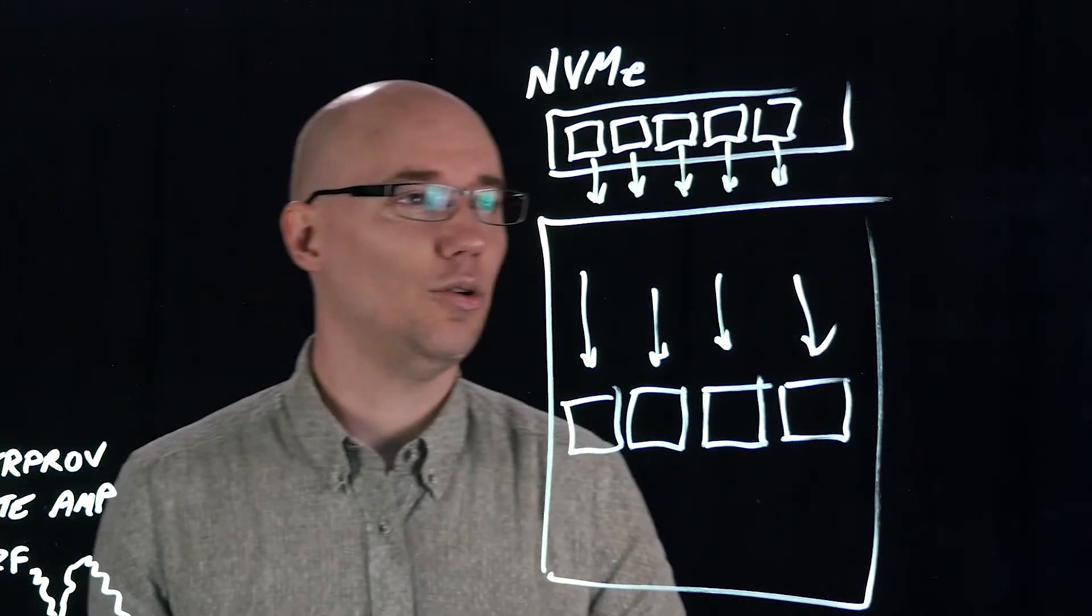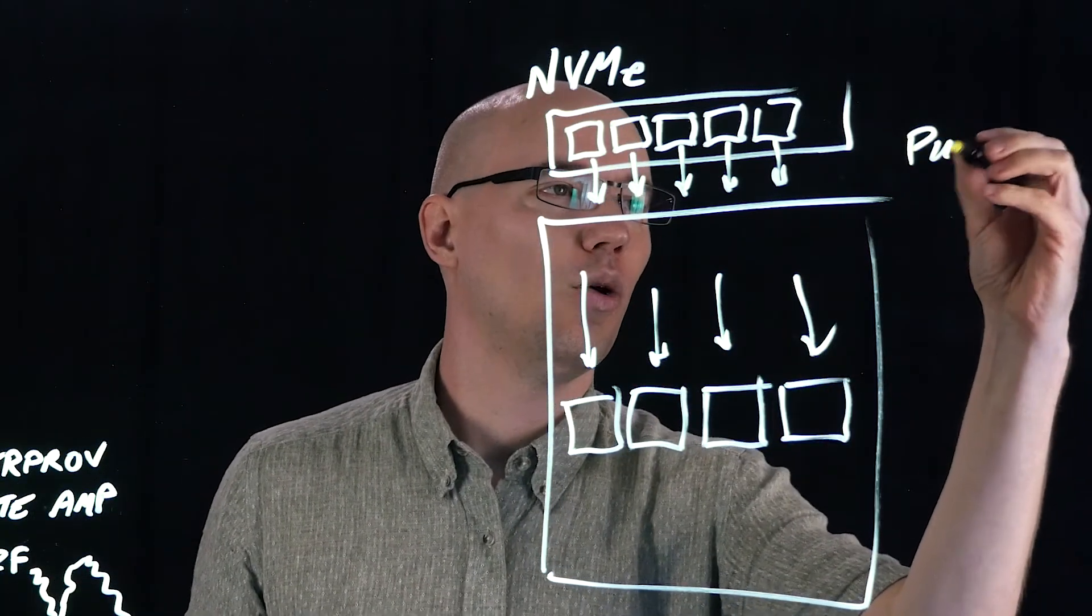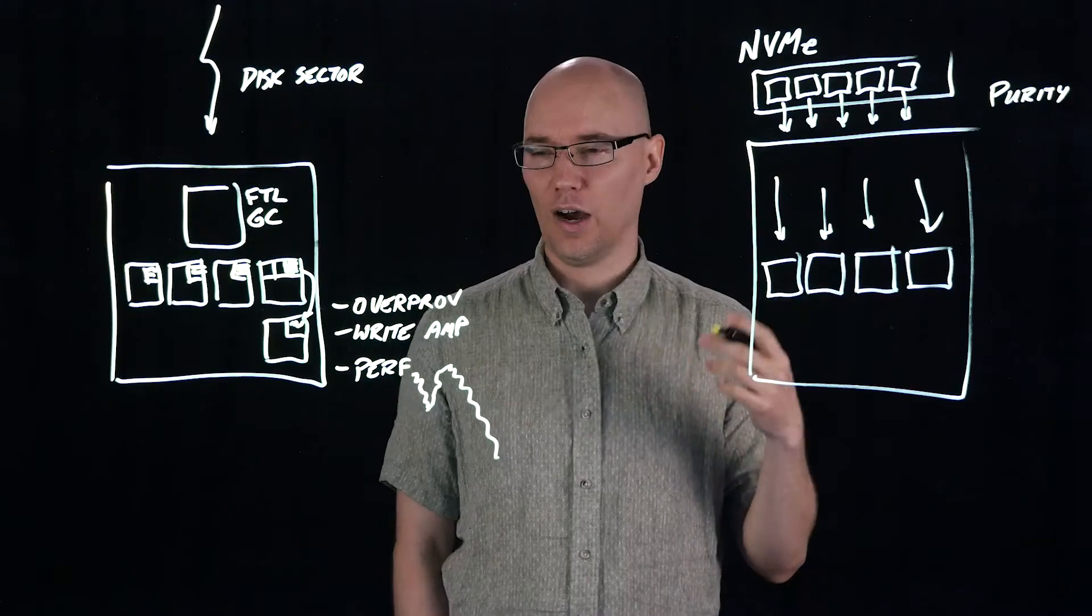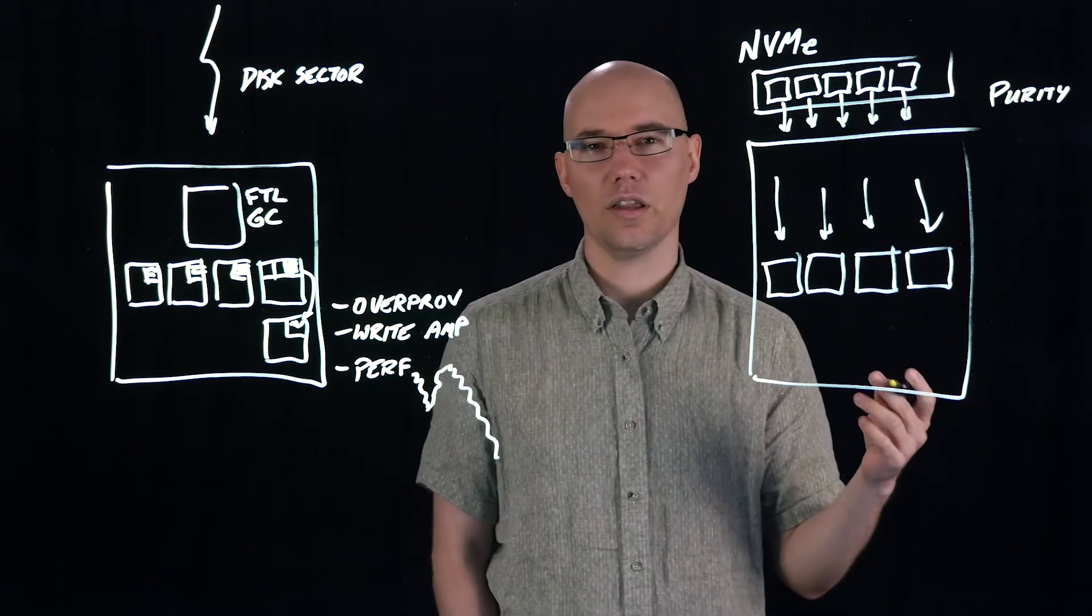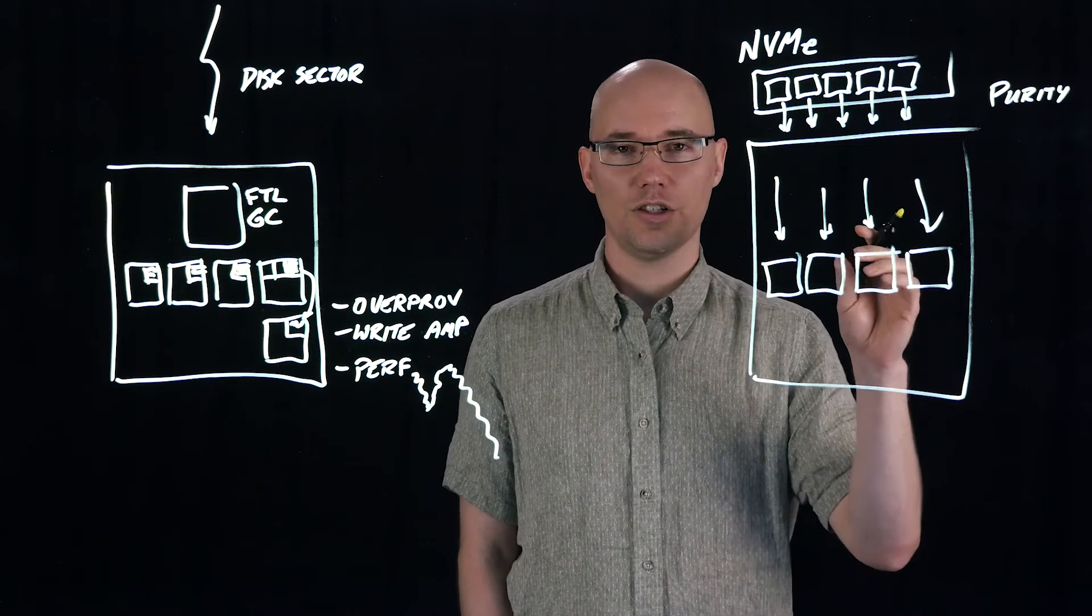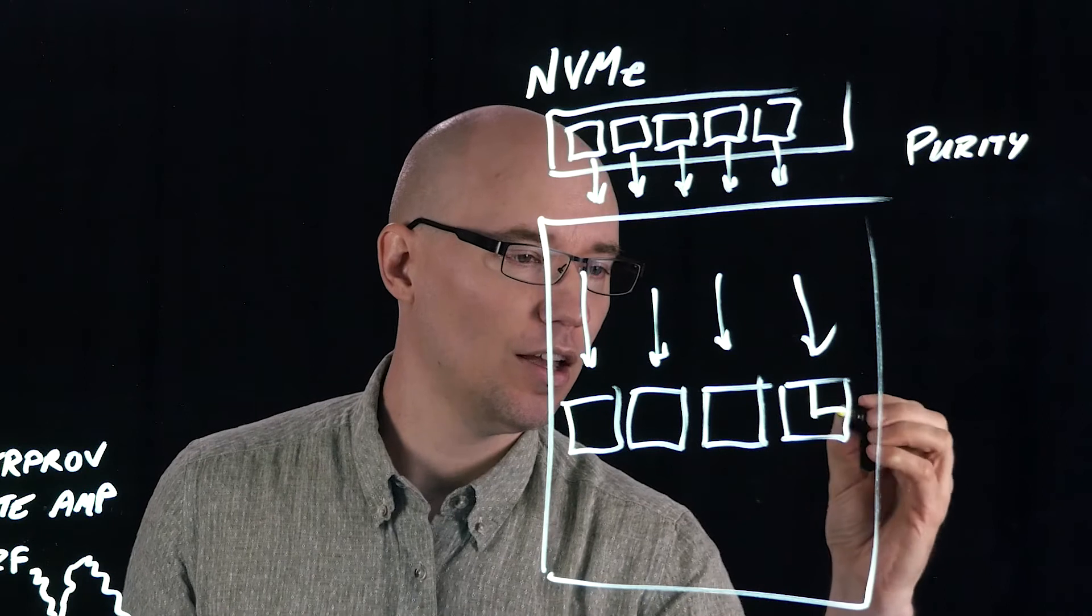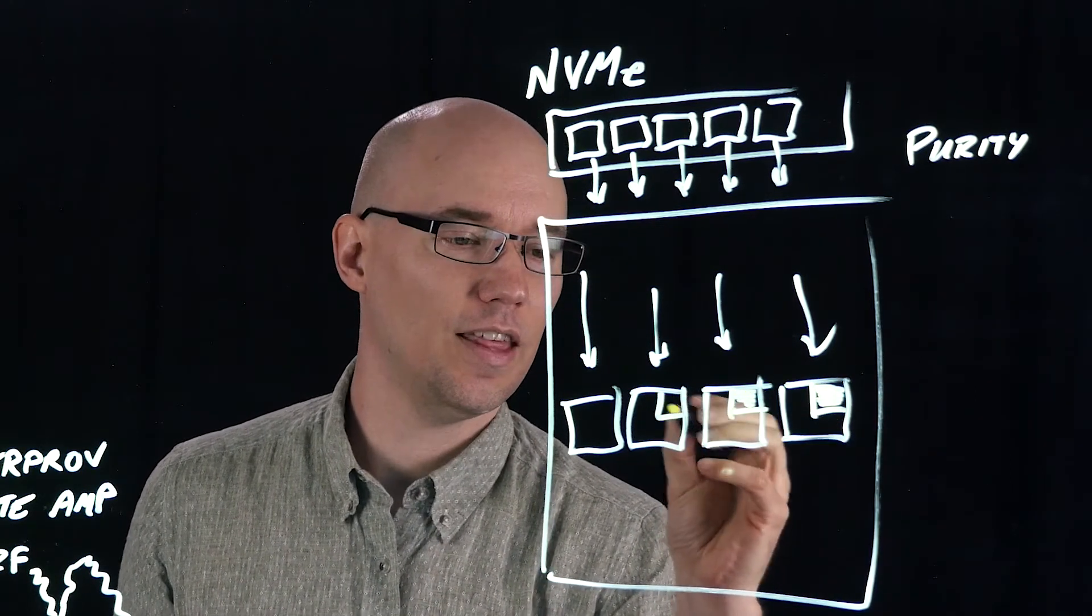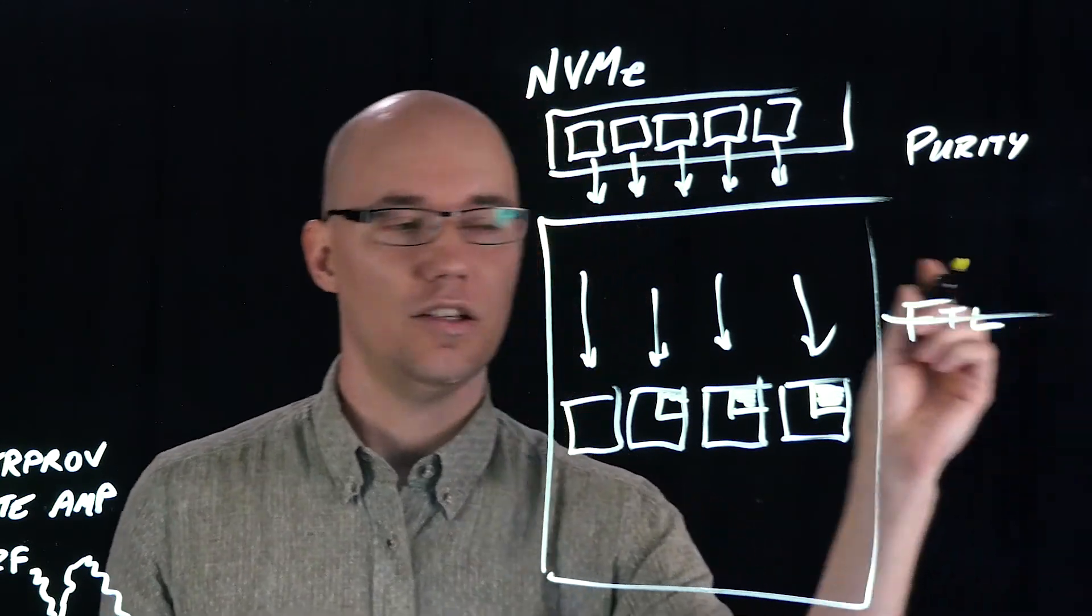So now we get to direct flash. Within Purity, we have never supported disks. Purity was always built to run on flash, which means our IO patterns are very flash friendly. In particular, Purity writes data in what we call segments, which are large pieces of data that are never modified in place. And so if we map Purity segments to flash blocks, that means that we don't need this FTL design at all.